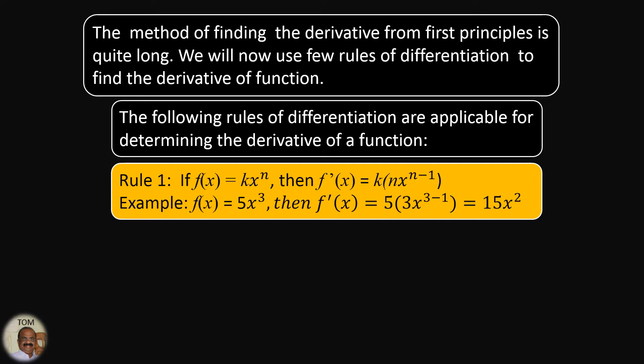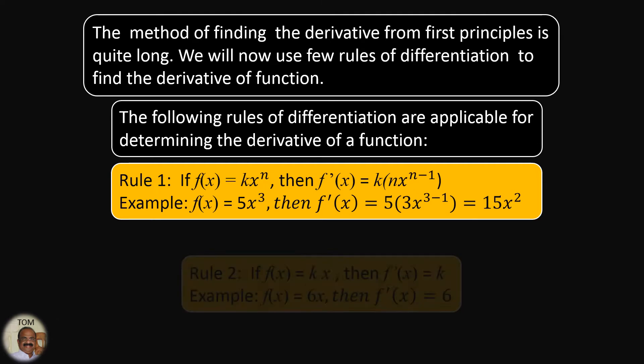For example, if f(x) = 5x³, then f'(x) is 5 times the exponent 3, giving us 3x to the power 3 minus 1, which is 2. So we get 15x².